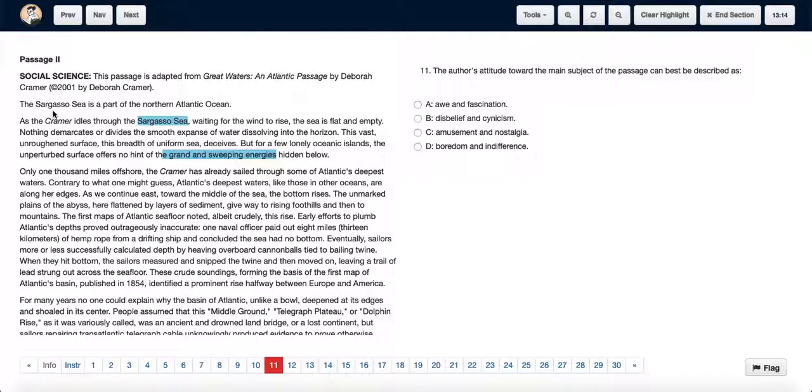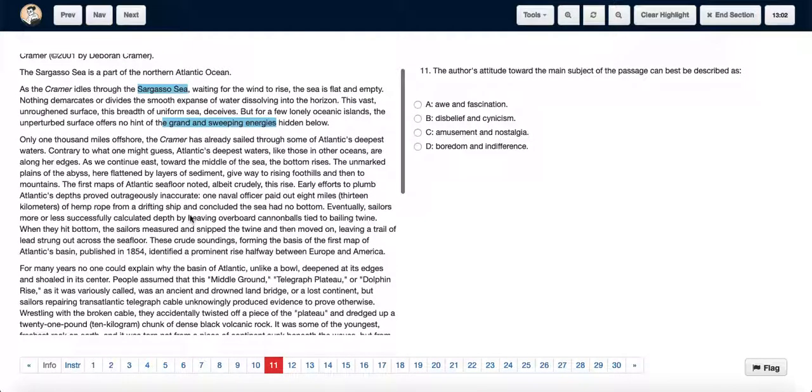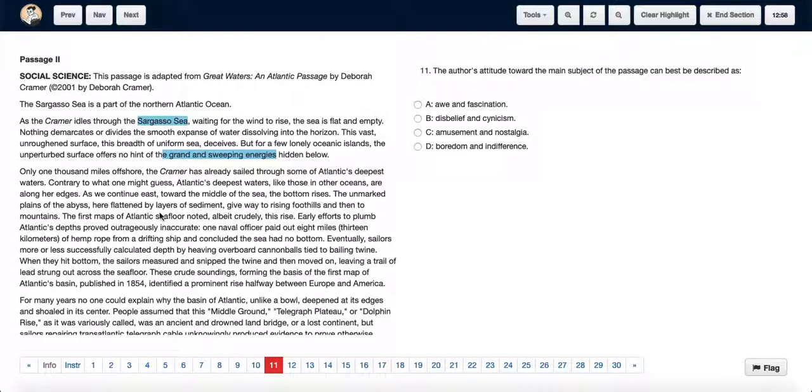We see that the first line states the Sargasso Sea is part of the North Atlantic Ocean. We know that the paragraph is mainly about this sea. As we read, we see the author calls it a grand thing and she talks about it very favorably.